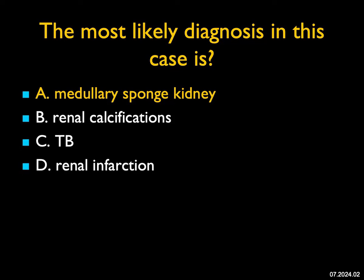Medullary sponge kidney is a malformation that generally becomes manifest with nephrocalcinosis and recurrent renal stones. Other signs may be renal acidification and concentration defects, pre-calyceal ductal ectasia, and neglected proximal tubular defects. Medullary sponge kidney is generally considered a sporadic disorder.